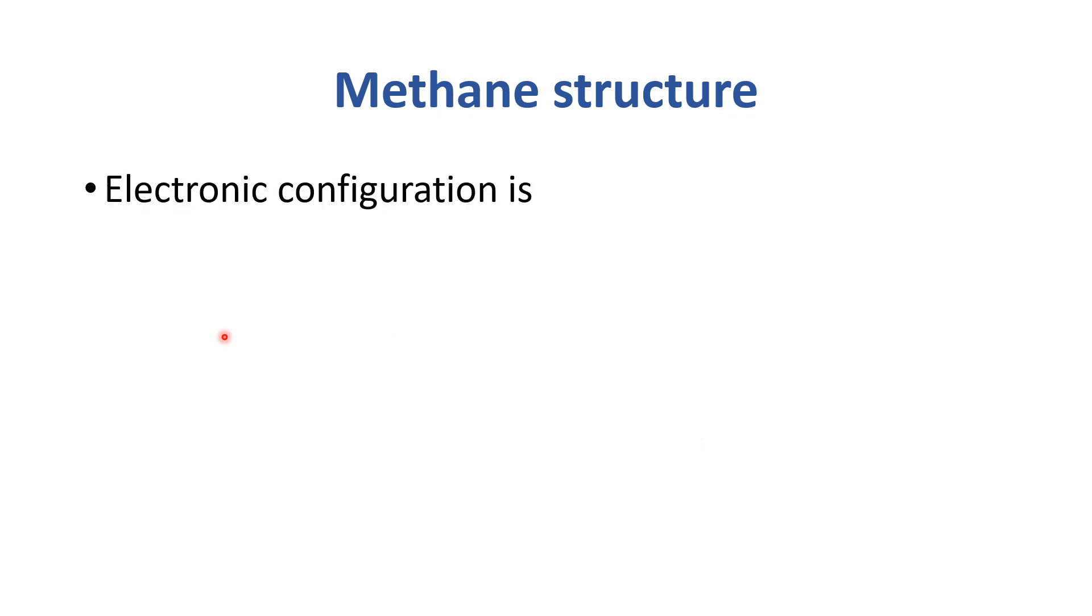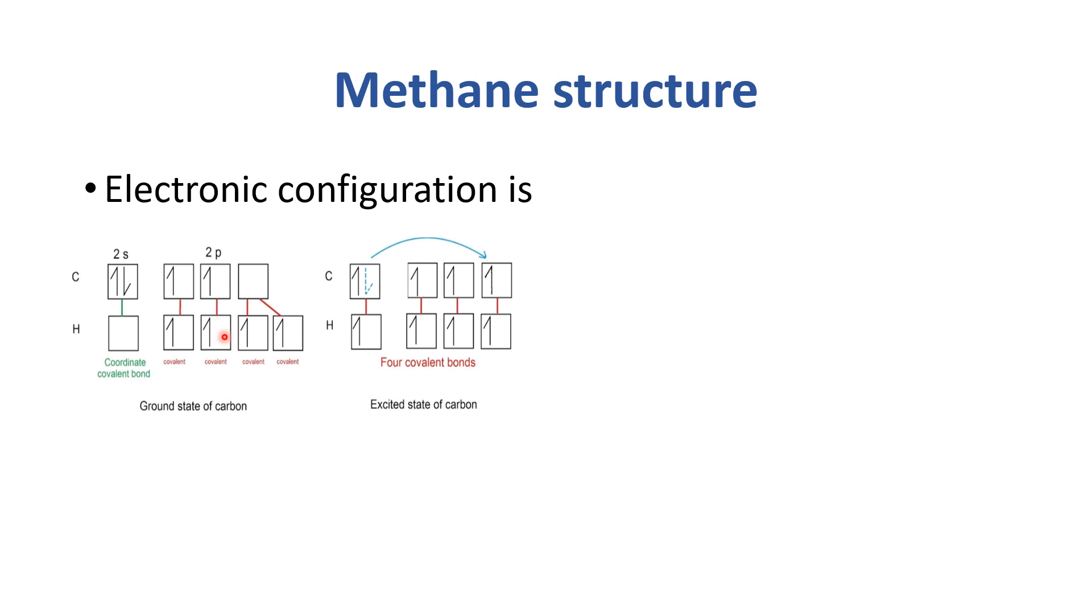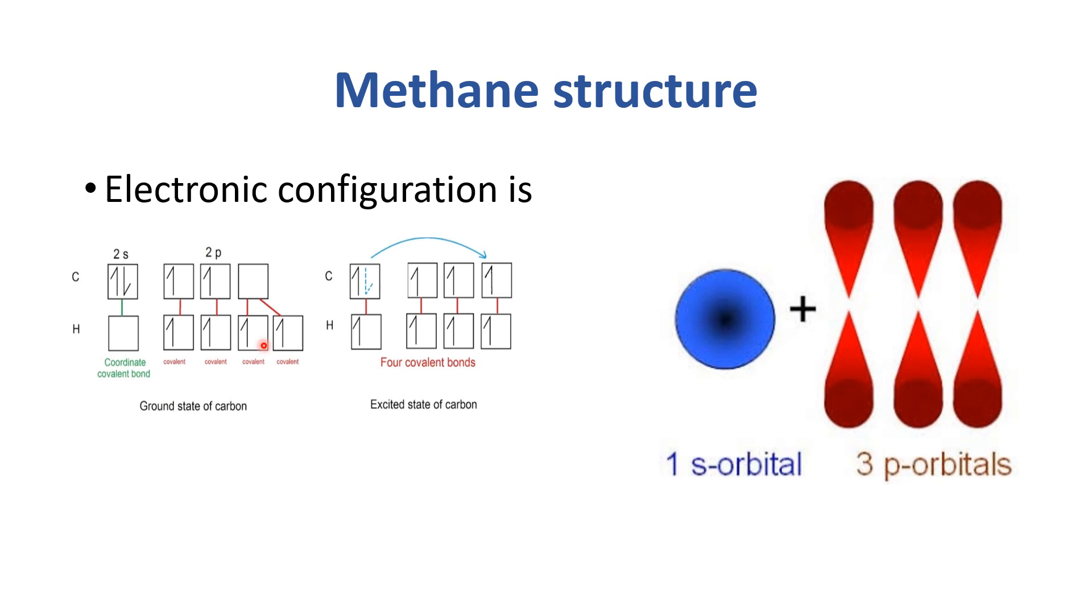If we talk about methane structure, the electronic configuration of carbon in the ground state has two electrons in 2s and two electrons in 2p orbitals. When it is in an excited state, it has four electrons available to form bonds. One s orbital and three p orbitals intermix to form sp³ hybrid orbitals, which have the same shape and energy.